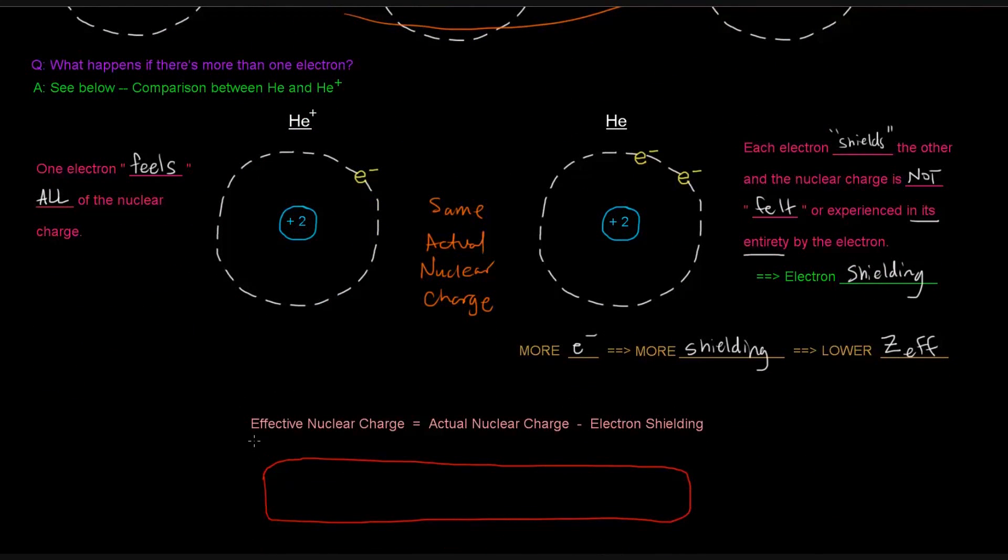So the effective nuclear charge, what is it exactly? It's the actual nuclear charge minus the effect due to electron shielding. And that's often represented in this equation.